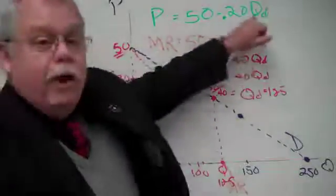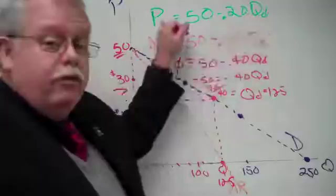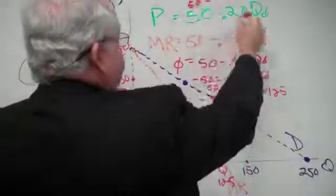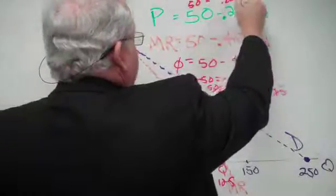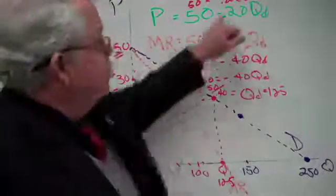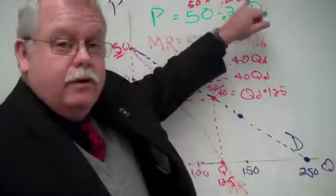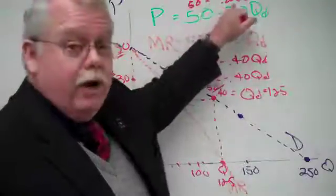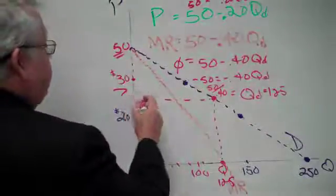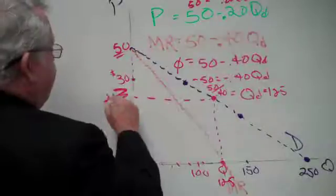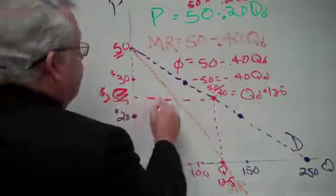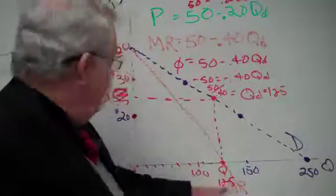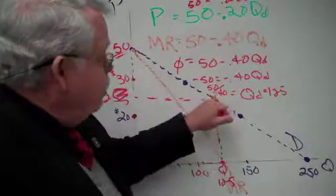So at a quantity of 125 units — if that's the quantity — what price is associated with that? We use the inverse demand: 50 minus 20% of 125. What's 20% of 125? That's one-fifth, that's 25. So 50 minus 25 equals $25. When the price goes to $25, that's the point at which quantity is 125 and marginal revenue is zero.